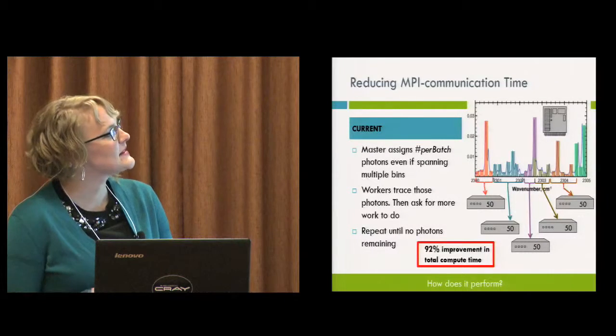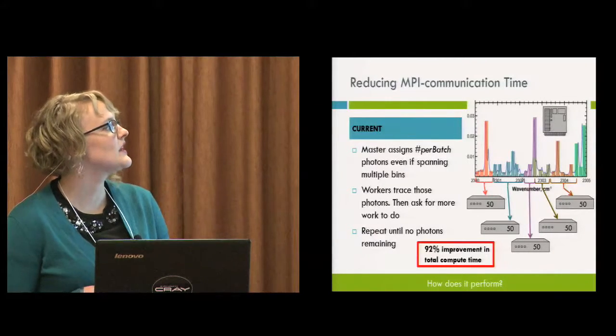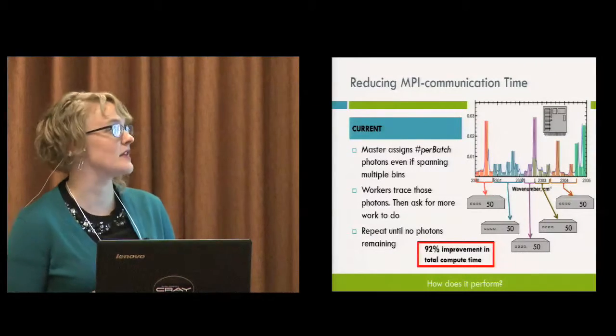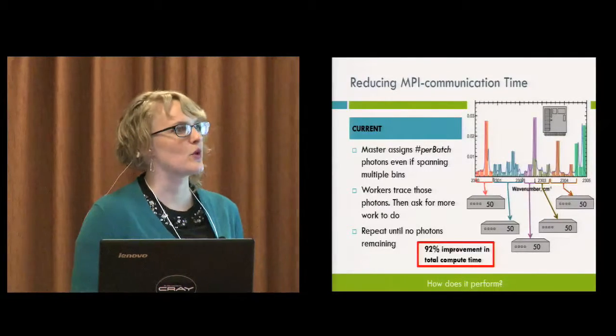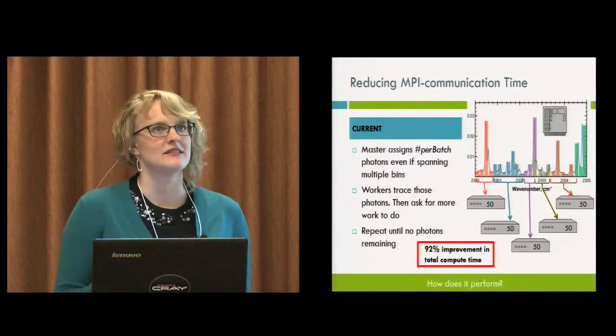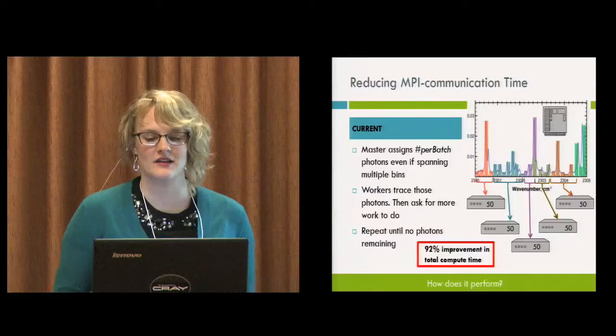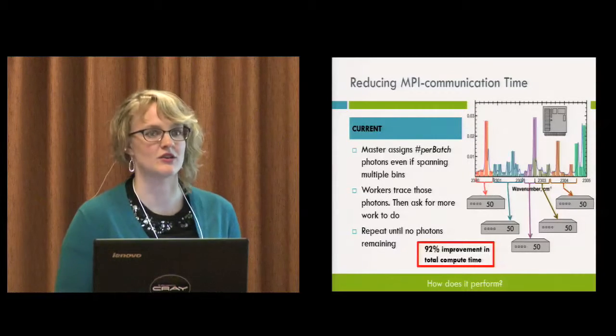So now what it does is it assigns the number per batch, the number of bundles per batch, even if that means it has to span multiple bins. So that meant I'm no longer sending one number through an MPI communication, but I'm sending a dynamically allocated array of however many photons are in each one of those bins.